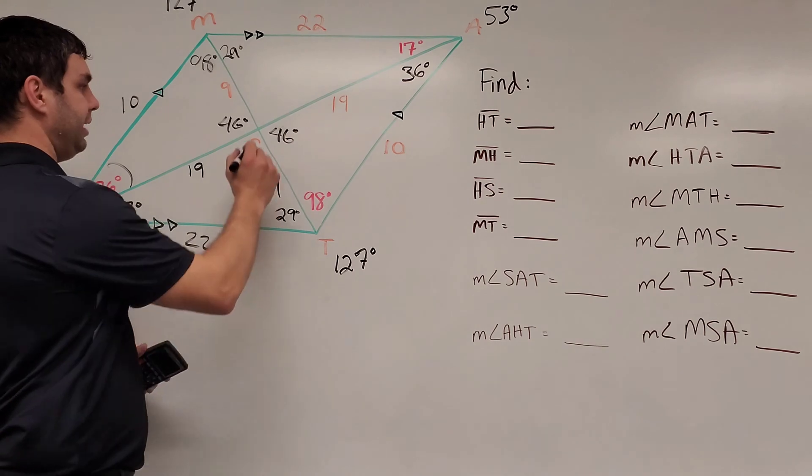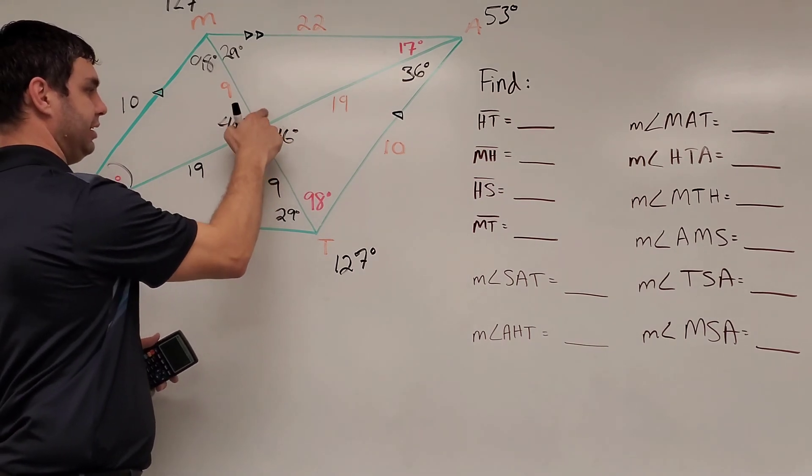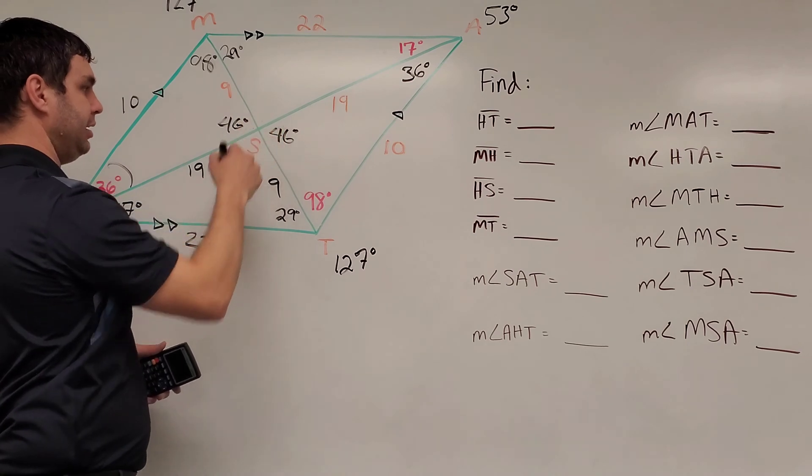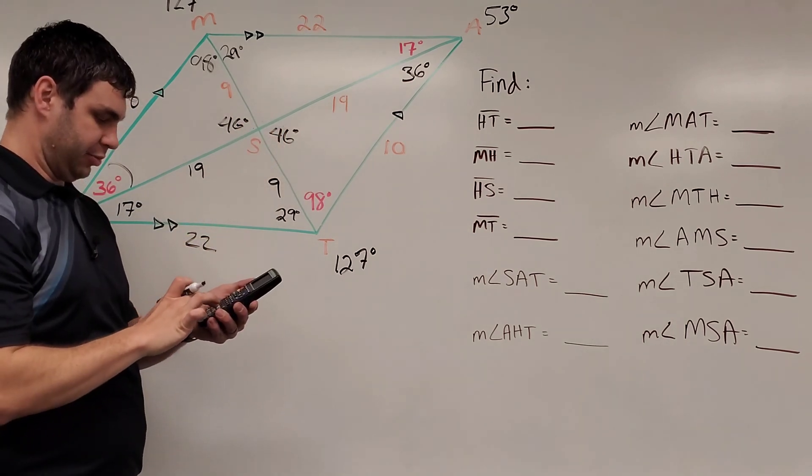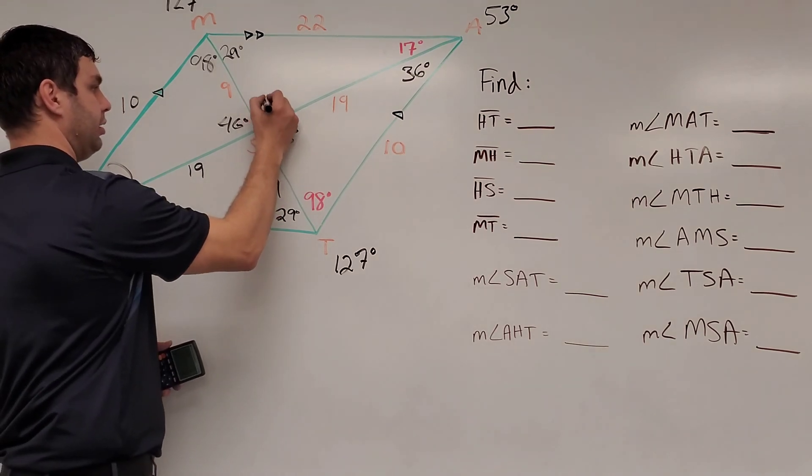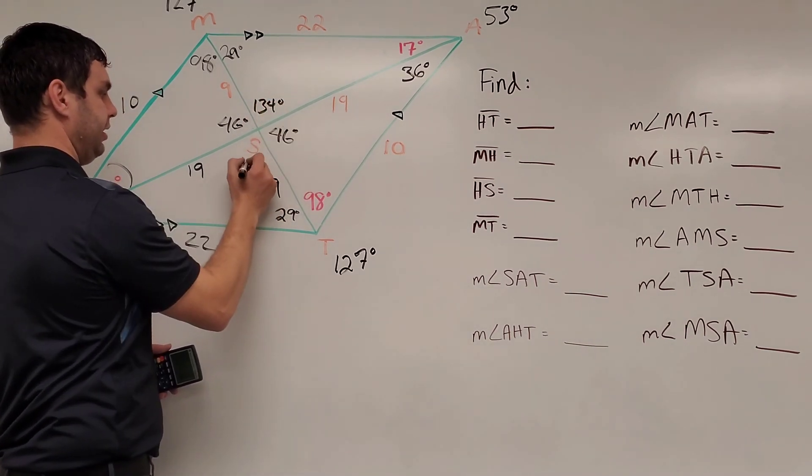Then those form a linear pair with the one that's missing by this down here by the S, and up above it at the top. So again, since that's a linear pair, we can do 180 minus 46, giving us 134 degrees there and there.